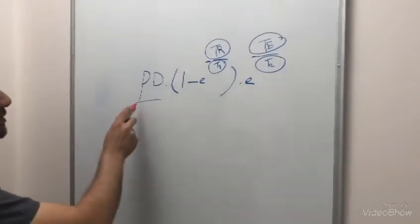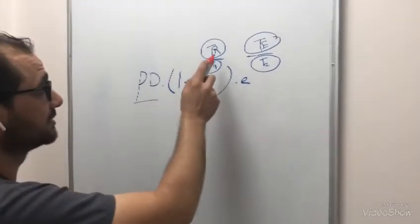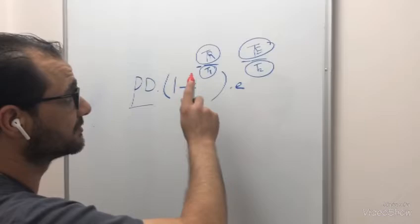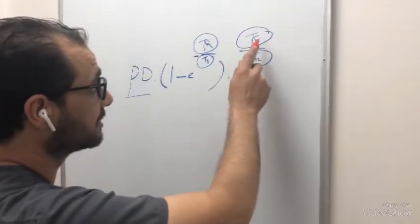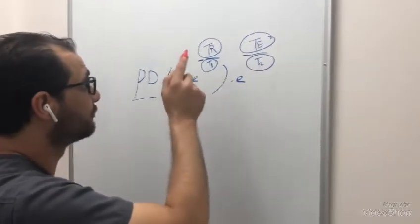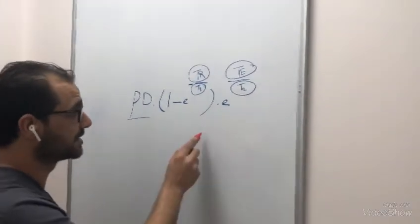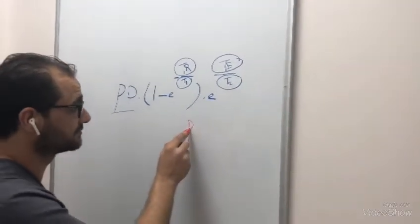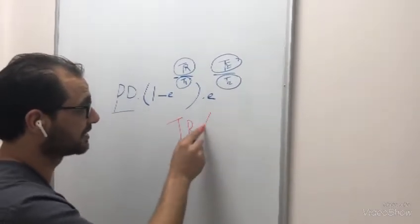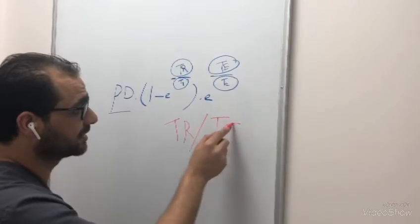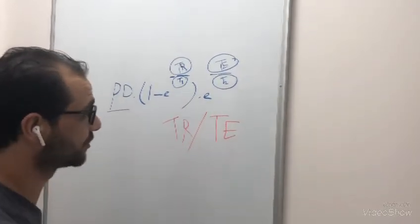The first one, proton density. Second one, repetition time. Number three, echo time. Four, T1, five, T2. Repetition time and echo time. We talked about it before.